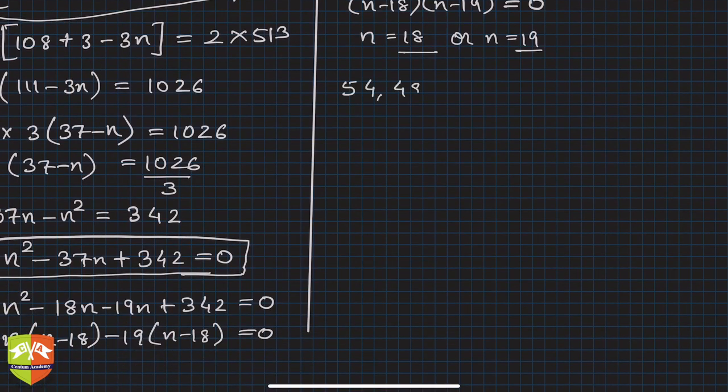If you notice: 54, 51, 48, and so on - these are all multiples of 3. So this will be 9, 6, 3, 0, -3, -6, and so on.